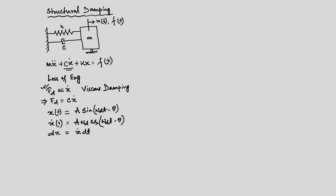If we wish to find out the energy dissipated in one cycle, that is the property of the damping. Ed — where d represents damping — will be the integration of the damping force fd times dx, integrated over one cycle.